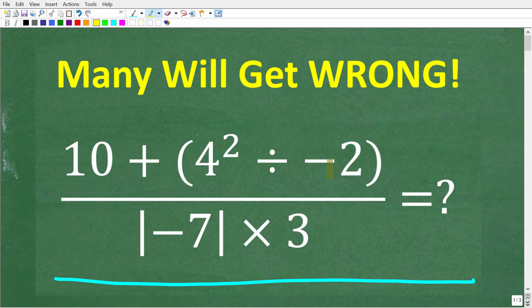So we have a fraction here and the numerator is 10 plus parentheses 4 squared divided by negative 2 parentheses and the denominator is the absolute value of negative 7 times 3. If you think you know the answer, put that into the comments section.